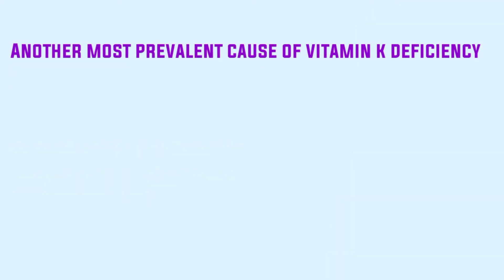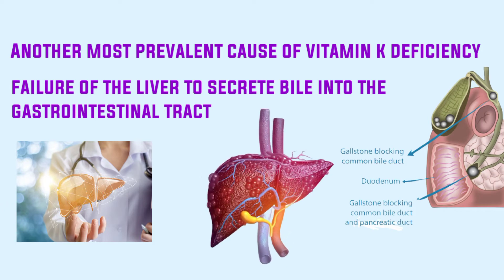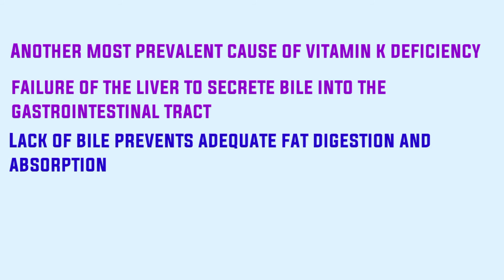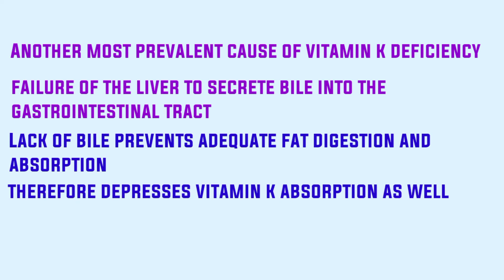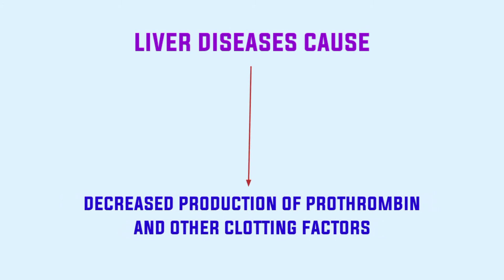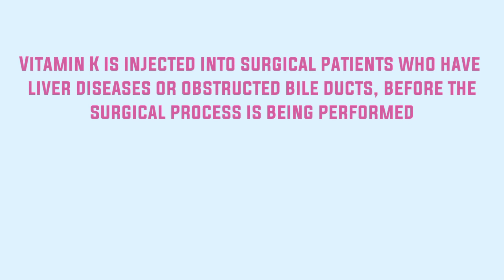Another prevalent cause of vitamin K deficiency is failure of the liver to secrete bile into the gastrointestinal tract, which occurs either as a result of obstruction of the bile ducts or other liver disease. Lack of bile prevents adequate fat digestion and absorption, and therefore depresses vitamin K absorption as well. Hence, liver disease often causes decreased production of prothrombin and other clotting factors, both because of poor vitamin K absorption and because of diseased liver cells.